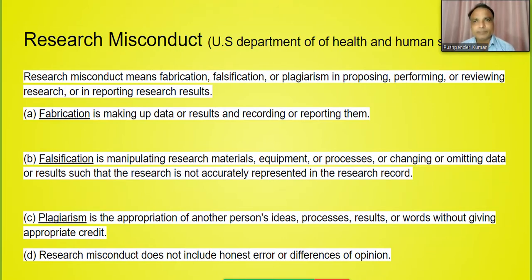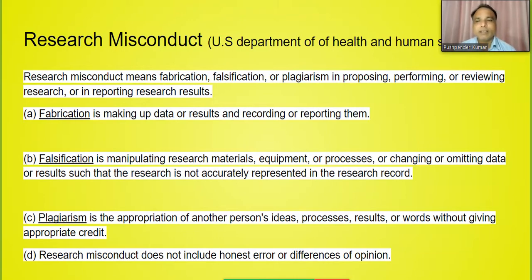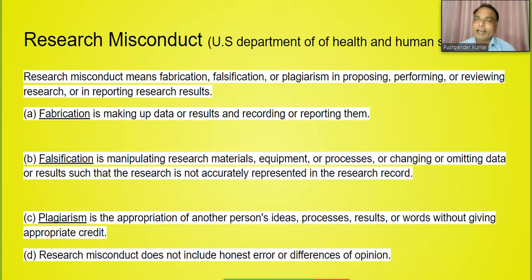The second misconduct is falsification. It is basically manipulating research material, equipment or process, or changing or omitting data or results such that the research is not accurately represented in the research record. For example, if your hypothesis is not rejected but you feel the research would be better if it were rejected, you give wrong or inaccurate information - that is falsification. Or if you collected data from 100 people but show that you collected from 500 - that is falsification.